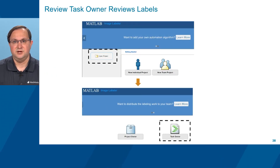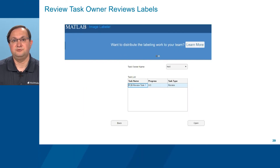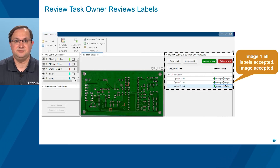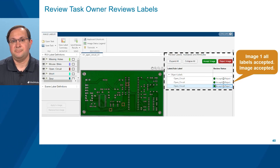To begin the review process, a review task owner invokes the Image Labeler app and opens the project as a task owner. The review task owner then selects their profile and their progress on their assigned review tasks becomes visible. Using the Review Labels, Sublabels, and Attributes pane at the right, the review task owner either accepts or rejects each object label for each image. The first image and its three labels are shown here — all labels have been accepted using the Accept buttons under the Review Status column, and the image itself is accepted using the Accept Image button. Note that the reviewer can also add, modify, or delete labels in addition to accepting or rejecting them.